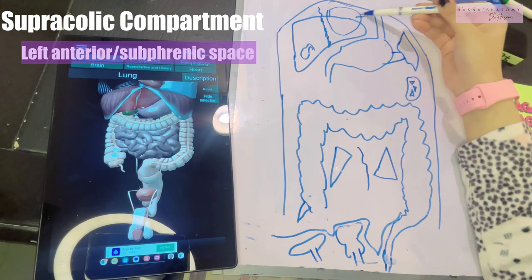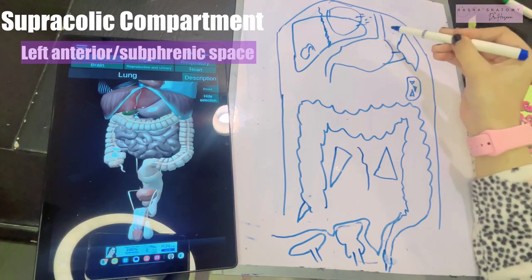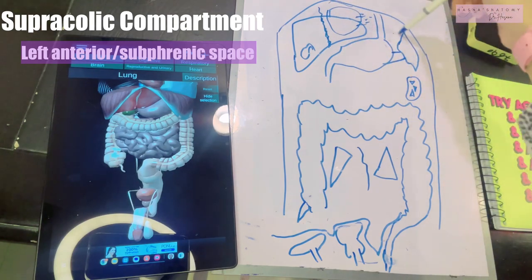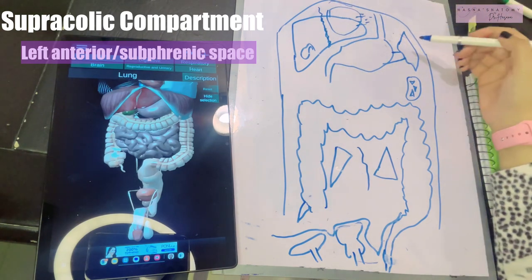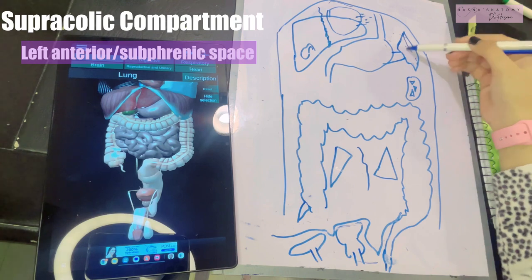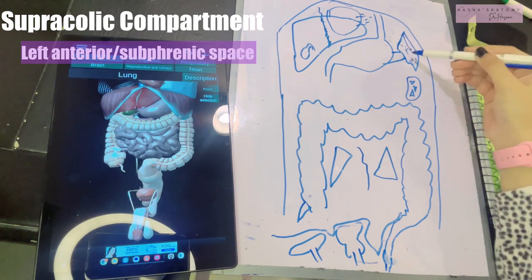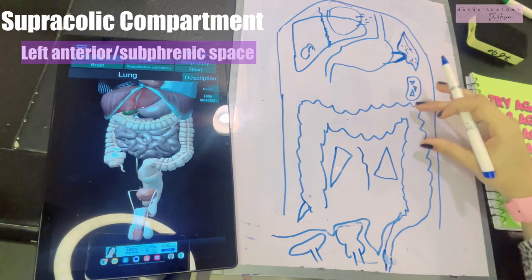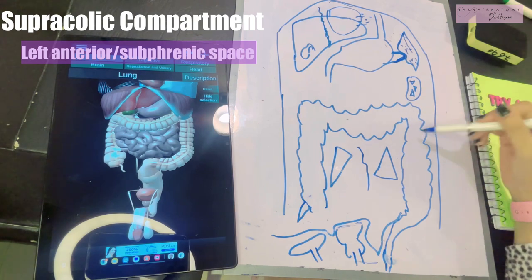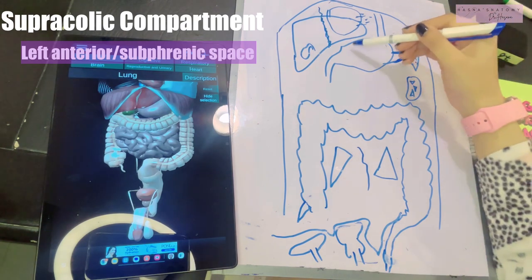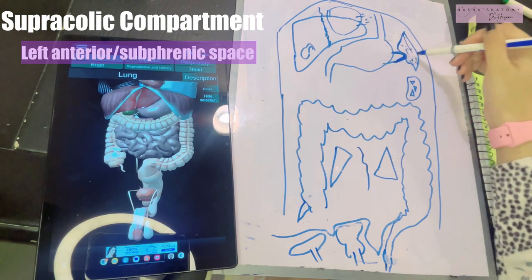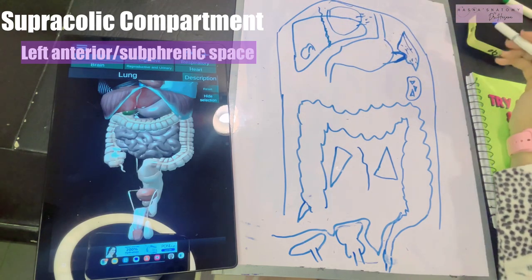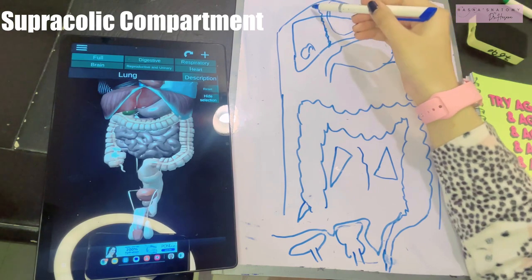The clinical importance of the left subphrenic space is that infection can come into it following surgery of nearby structures. Structures that can communicate and spread abscess into this space include the spleen, the tail of the pancreas, the splenic flexure of the colon, and the stomach. Any operation or manipulation of these places resulting in infection will spread to the left anterior space — and that is the significance of this space.